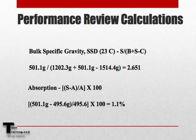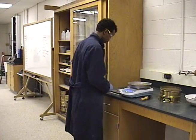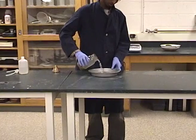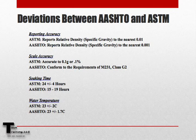When reporting the relative density or specific gravity value, for AASHTO T84 this number is reported to the nearest 0.001, while for ASTM C128 it is reported to the nearest 0.01. However, for both AASHTO T84 and ASTM C128, absorption is reported to the nearest 0.1%. This concludes the overview of AASHTO T84 and ASTM C128, specific gravity and absorption of fine aggregate, along with a review of the deviations between AASHTO and ASTM.